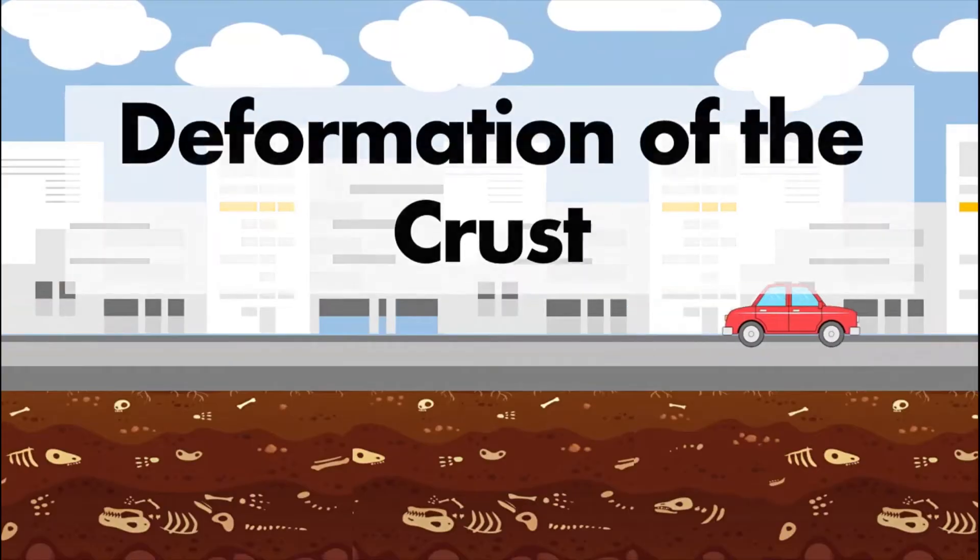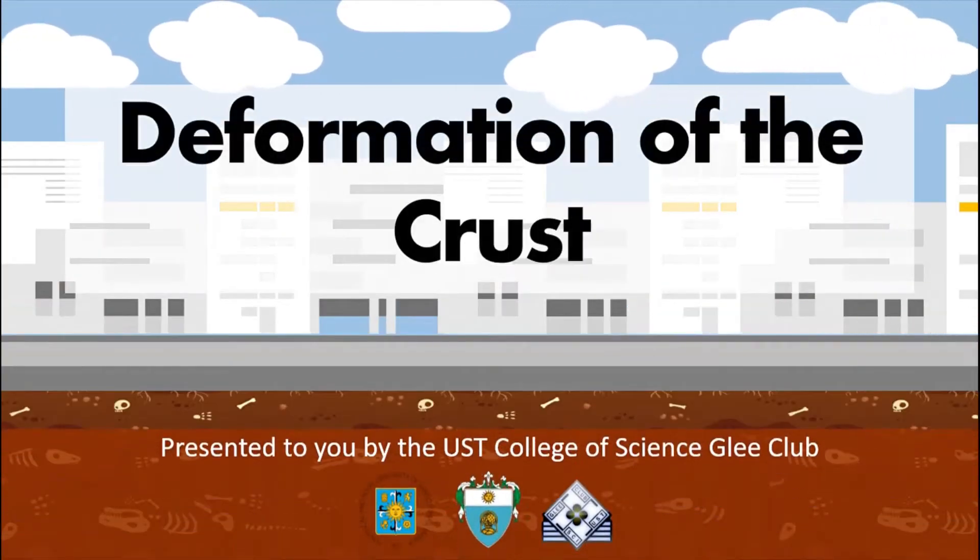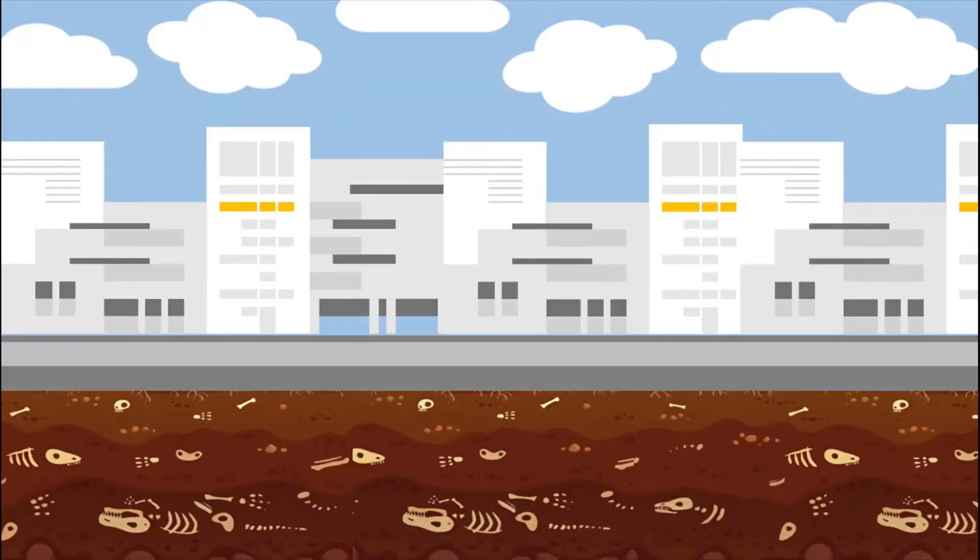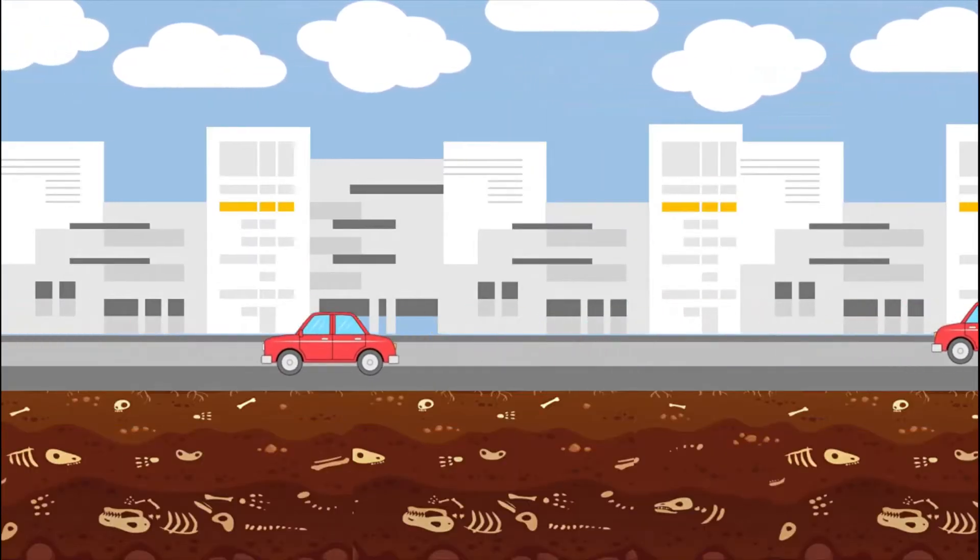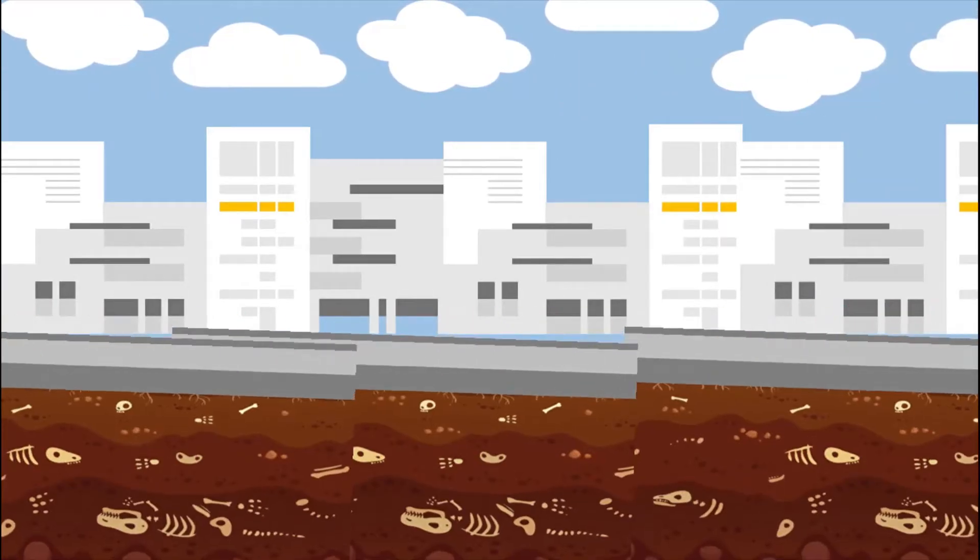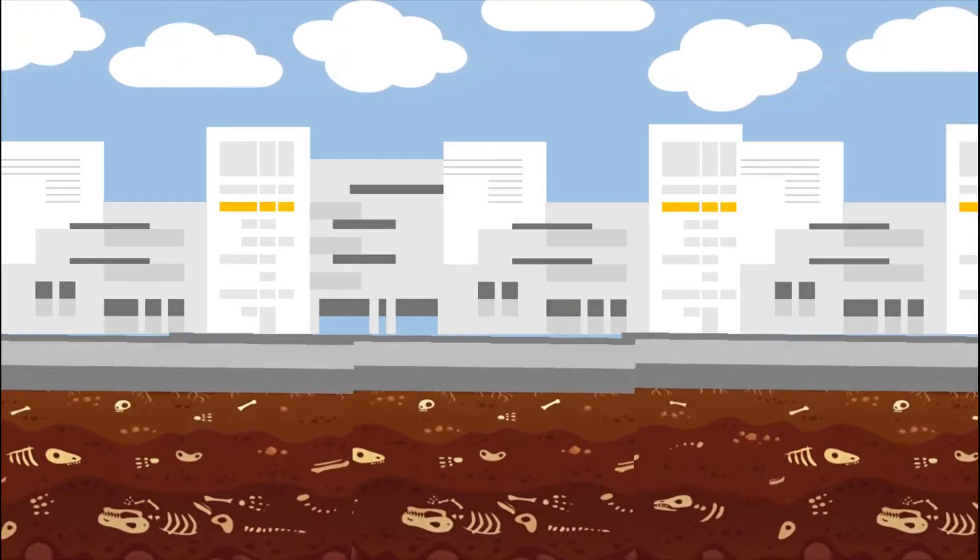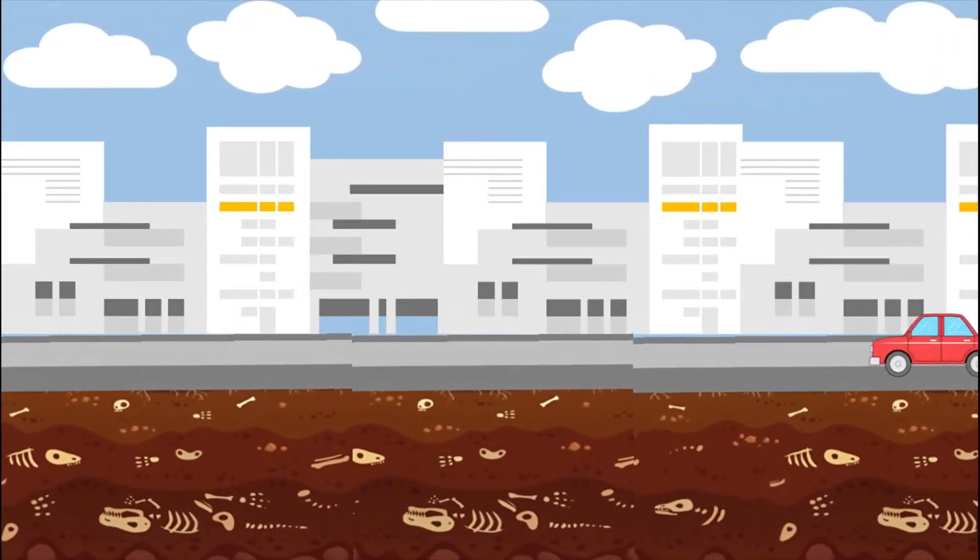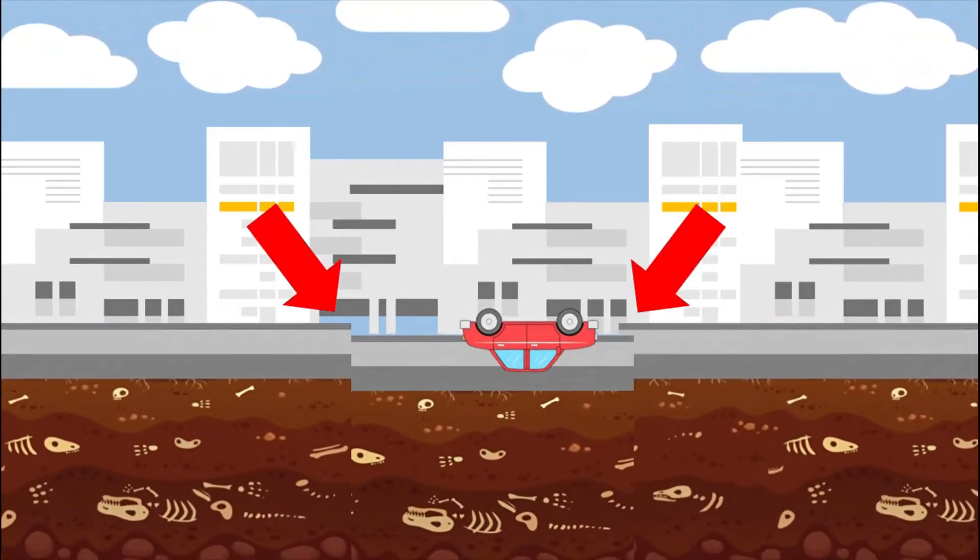This is a discussion on the deformation of the crust presented to you by the USD College of Science Glee Club. Let's start with a situation. It's a normal day and you're driving your car down the street when suddenly there's an earthquake. The ground shakes, then it begins to shift upwards. This sudden change in the ground is called a deformation.